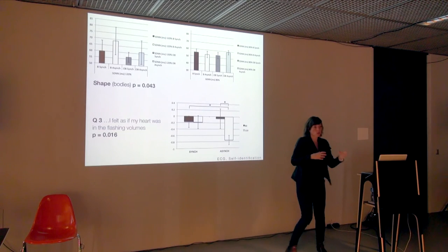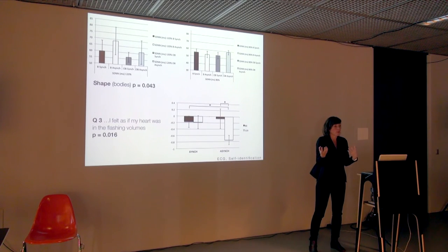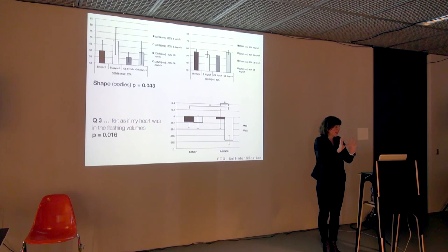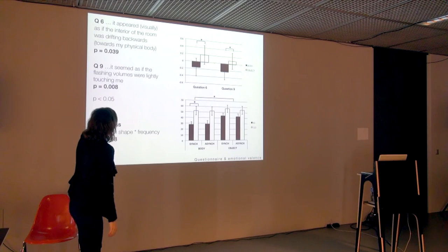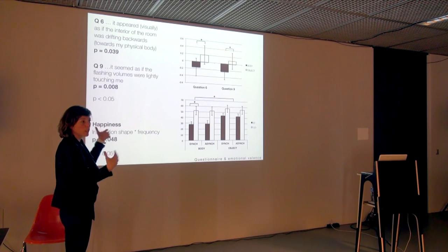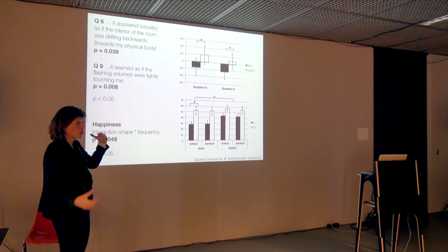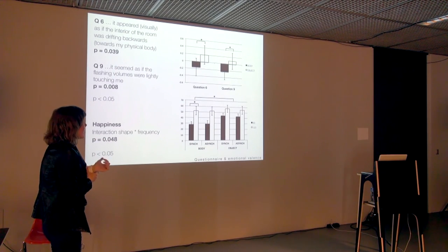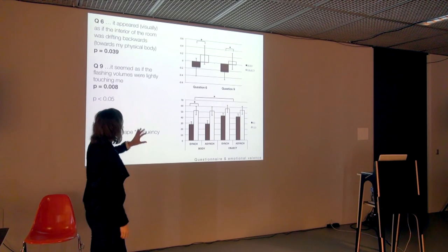One question is: what is the difference between the bodies and the blobs — what difference does it make whether I see a human body shape or an abstract shape in space? We had these two questions appearing throughout the studies. The interior of the room was drifting backwards — not the avatar this time. And secondly, people were feeling touched by these shapes. There is a big difference for the bodies: synchrony doesn't interfere as much — the effect depended only on viewing the bodies. These two effects were absent for the objects, and for the blobs they were present but weaker, both for drift and secondly.